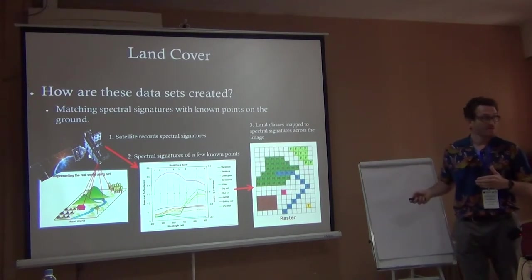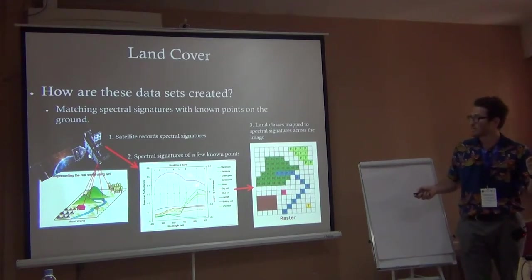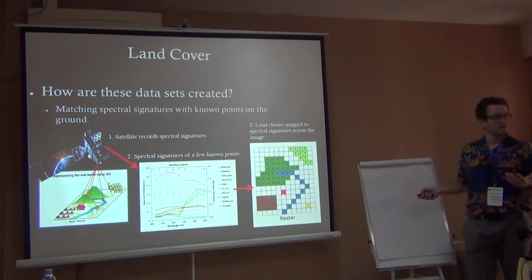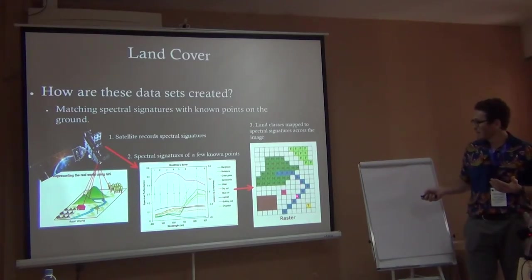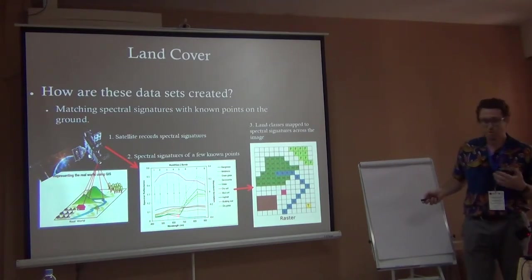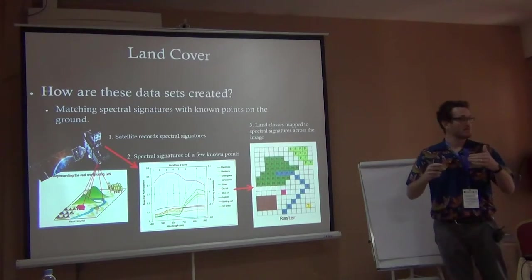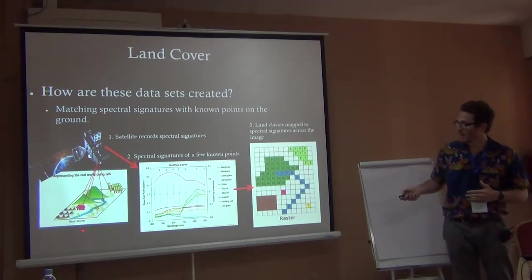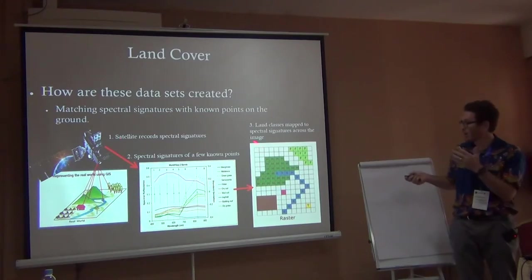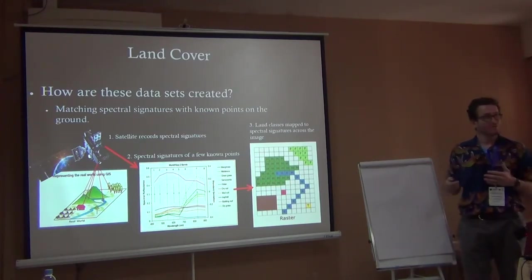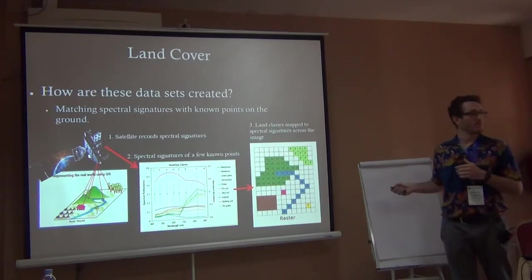We measure the reflectance across the earth — if a cell gives a distribution like this, it must be a building because it reflects like this. This area, when we looked at it with the satellite, the light was reflected differently, so we know it's water. Each type of land cover reflects light in different ways, so we can automatically identify — just by the way the light is reflected — whether this is a mountain or a forest.